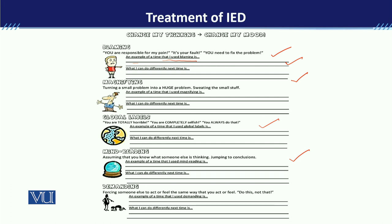پھر 'mind reading' — یعنی یہ assuming کرنا کہ دوسرا شخص کیا سوچ رہا ہے، 'مجھے پہلے ہی پتا تھا' — اور اس کی basis پر conclusion draw کر لینا۔ That is very common in those people who have anger problems. Then 'demandingness' — یعنی جو چیز میں چاہ رہا ہوں بالکل اسی طرح ہو، اور اگر اس طرح نہیں ہوگا تو definitely I have a right to get mad. یہ ساری چیزیں basically cognitive distortions ہیں۔